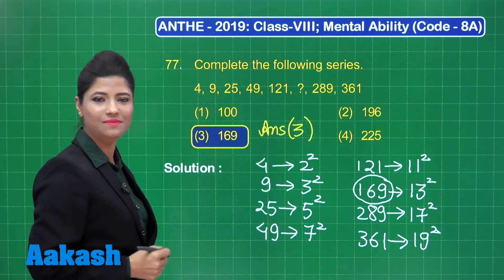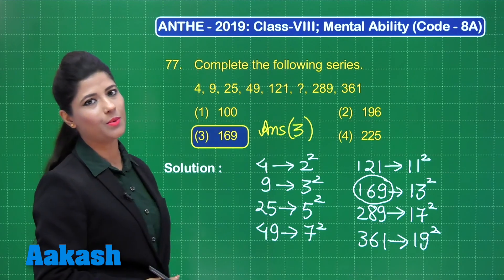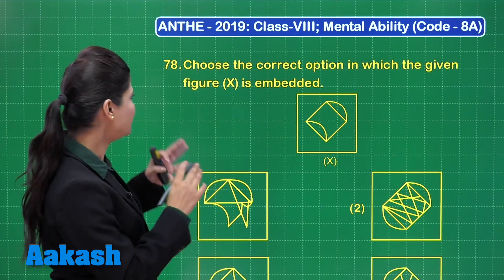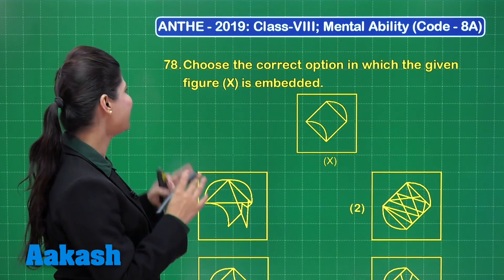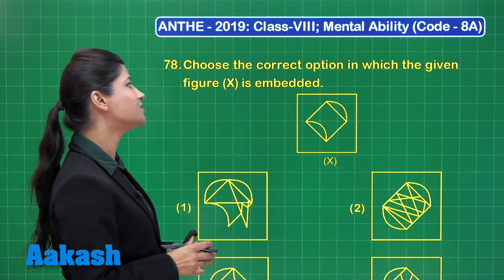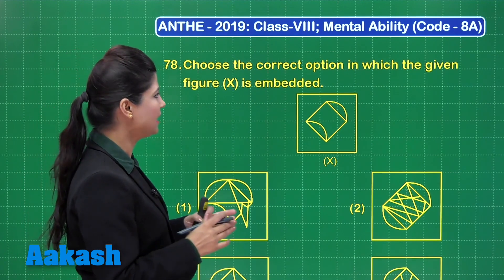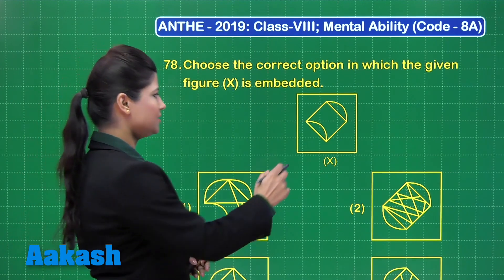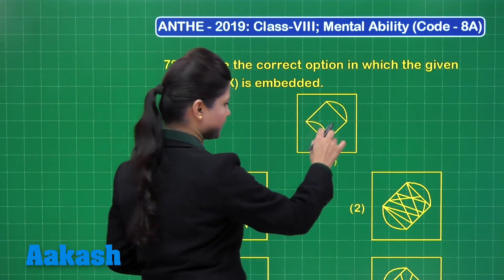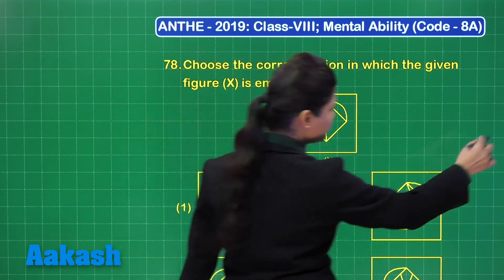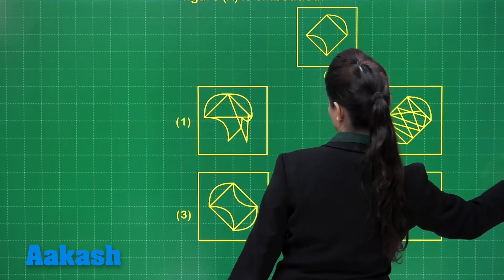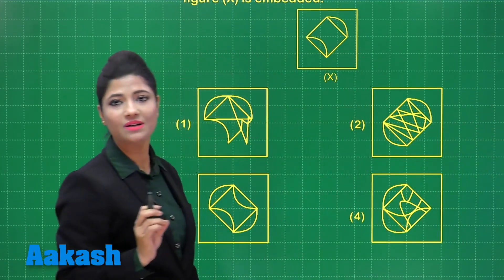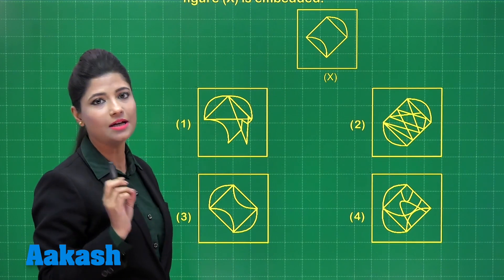You can clearly find that in option number 3, so the correct answer is option 3. I hope it is clear. Let's move to question number 78. This question states: choose the correct option in which the given figure X is embedded. Here is figure X, and out of the four options, we need to figure out which figure it is clearly embedded in.